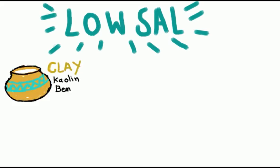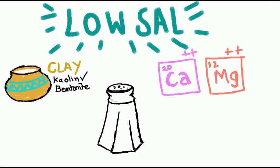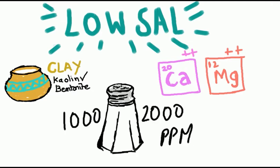Before low salinity injection can work though, a few other conditions must be met. Clay must be present in the reservoir and the type of clay has a massive effect on the oil recovery. Calcium and magnesium ions must be present in the reservoir and lastly, the injective water must have a salinity between 1000 and 2000 parts per million. Also the oil in the reservoir must be of a polar nature.